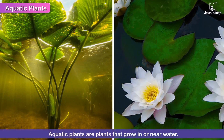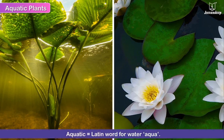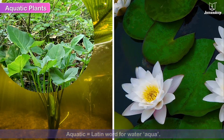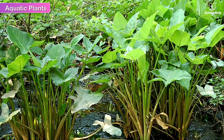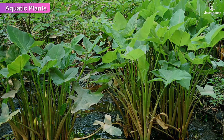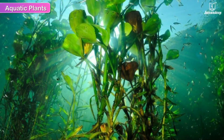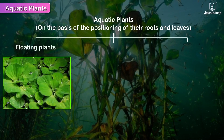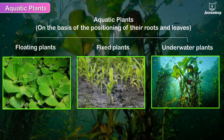Aquatic plants are plants that grow in or near water. The word aquatic is derived from the Latin word for water, aqua. These plants are naturally adapted to living in wet conditions. Aquatic plants predominantly grow in water. These plants are of three types: floating plants, fixed plants and underwater, i.e. submerged plants. These plants are classified on the basis of the positioning of their roots and leaves.